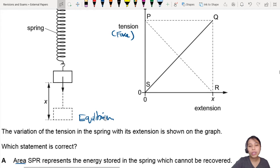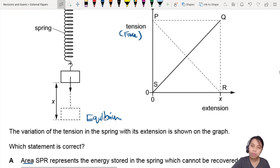A: Area SPR is the energy stored in the spring which cannot be recovered. So SPR is this thing.